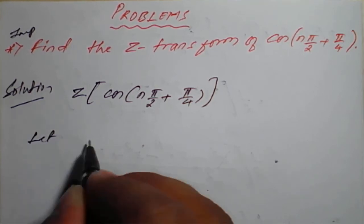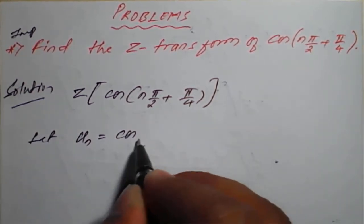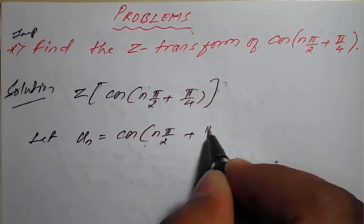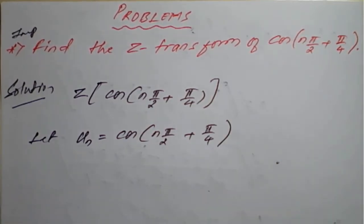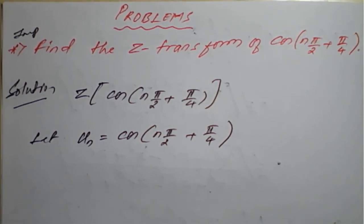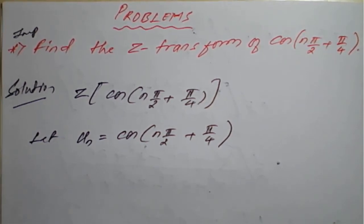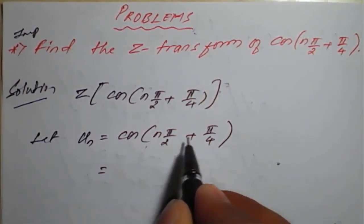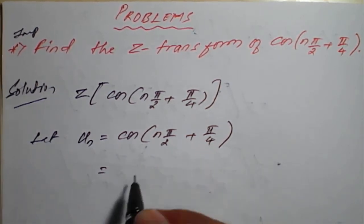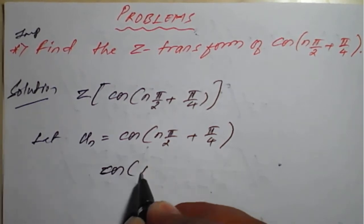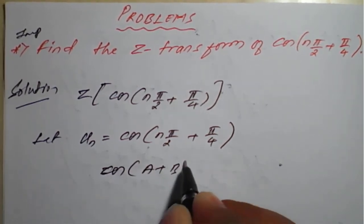We will consider u(n) = cos(nπ/2 + π/4). To apply the Z transform, we will first simplify using a trigonometric result. We want to apply the cos(a + b) formula.